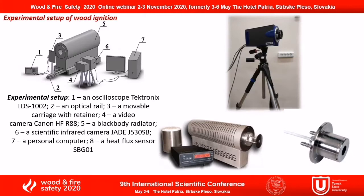Here you can see the experimental facility used to estimate, in laboratory conditions, the charring rate and temperature distribution on wood samples under the influence of heat exposure. The setup includes an infrared camera JB500, a video camera, a black body radiator with a temperature range from 100 up to 1100 degrees simulating the radiant heat flux source, a heat flux sensor, and other facilities.